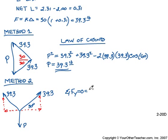So we have 39.3 times the sine of 30 and of course that's times 2 because of the two sides. And then we have P going down.